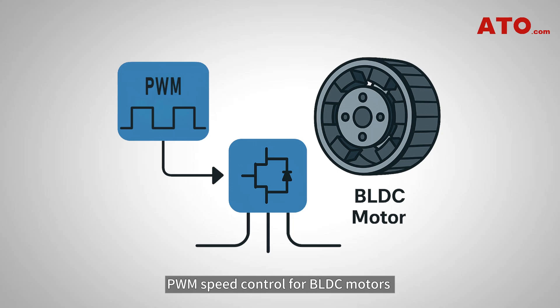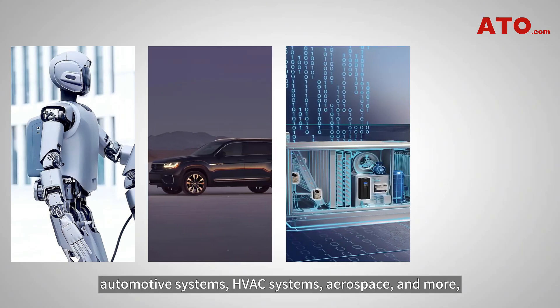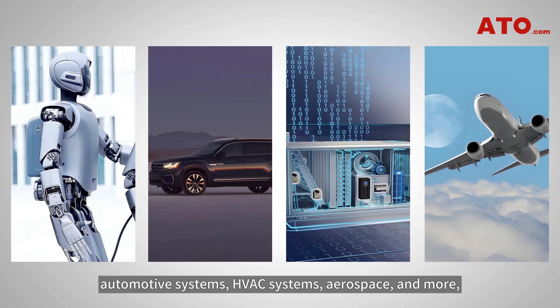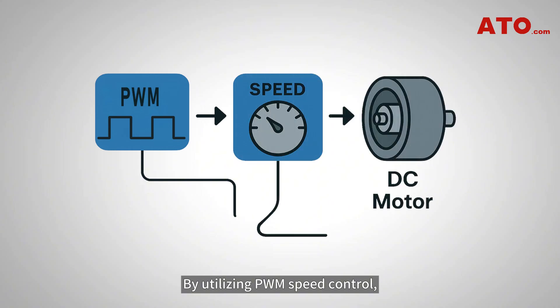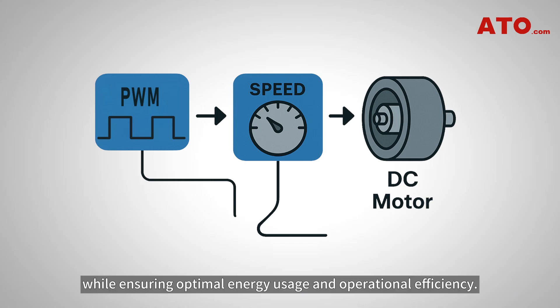PWM speed control for BLDC motors finds wide application in industries such as robotics, automotive systems, HVAC systems, aerospace, and more, where precise speed control and efficiency are crucial. By utilizing PWM speed control, engineers can efficiently regulate the speed of BLDC motors, enabling tailored performance for a variety of applications while ensuring optimal energy usage and operational efficiency.